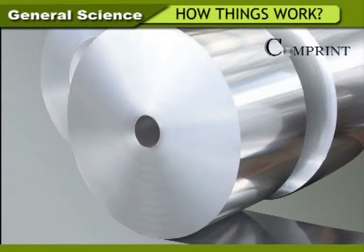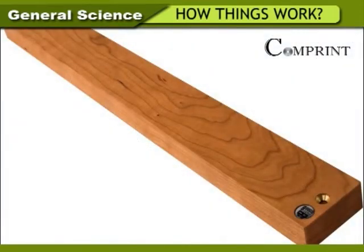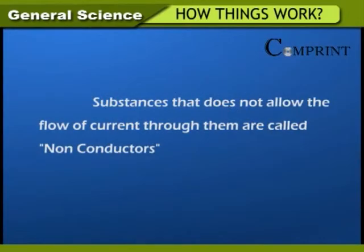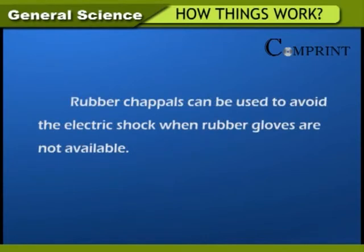Metals like copper, aluminum, and iron allow the flow of current. Substances that allow the flow of current through them are called conductors. Rubber footwear can be used to avoid electric shock when rubber gloves are not available.